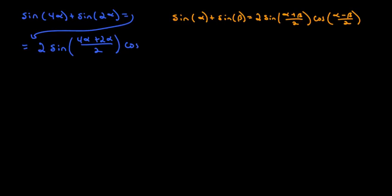Then I have to multiply that by the cosine of the difference of these two. So 4 alpha minus 2 alpha over 2.